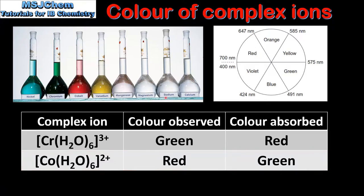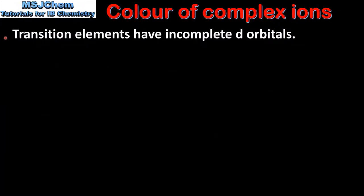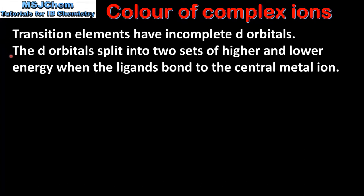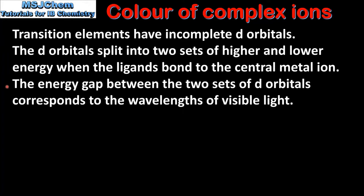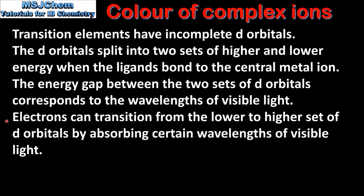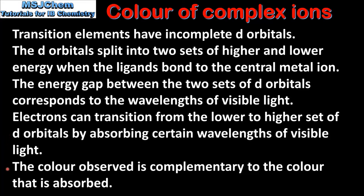Note that solutions of magnesium, sodium and calcium ions are colourless because they are not absorbing any wavelengths of visible light. To summarize: transition elements have incomplete d orbitals; the d orbitals split into two sets of higher and lower energy when ligands bond to the central metal ion; the energy gap between the two sets corresponds to the wavelengths of visible light; electrons transition from the lower to higher set of d orbitals by absorbing certain wavelengths of visible light; and the colour observed is complementary to the colour that is absorbed.